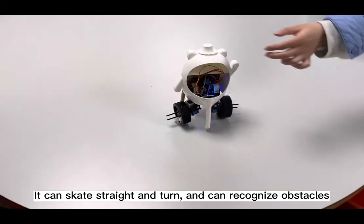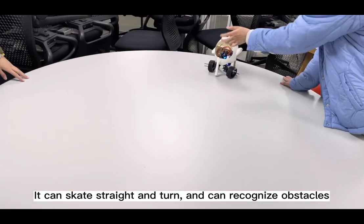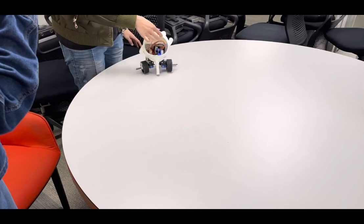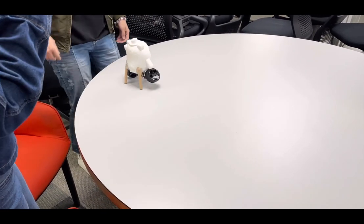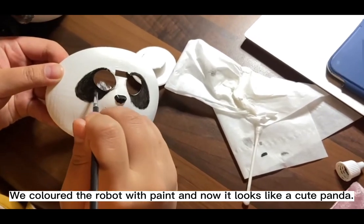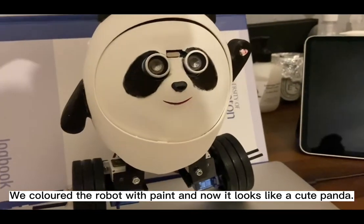It can go straight and turn and can recognize obstacles. We color the robot with paint and now it looks like a cute panda.